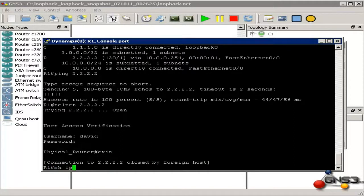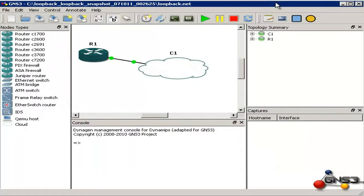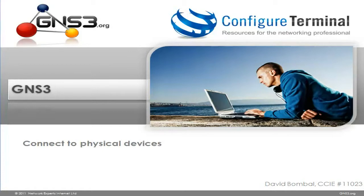Once again, ping 2.2.2.2 — I can telnet to 2.2.2.2 and notice we are on the physical router. I have shown you an example of communication between the GNS3 router and a physical router using the loopback adapter connector in GNS3. This GNS3 router is connected to the cloud which connects us to the physical infrastructure, and we are learning routes from a physical router. This communication has been successfully configured. That concludes the short video showing you how to integrate GNS3 with physical devices — how to configure GNS3 to talk to a physical PC as well as a physical Cisco router, and how to enable a routing protocol to exchange routes. I'm David Bombal and I wish you all the best with your studies. Thank you for watching.